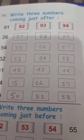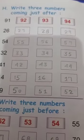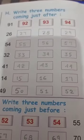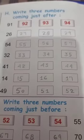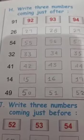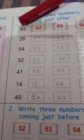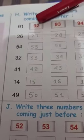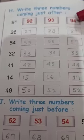So the next exercise, we have to simply write the forward counting coming after the given number like 91, after 91, 92, 93, 94.